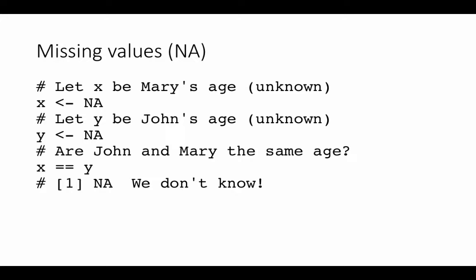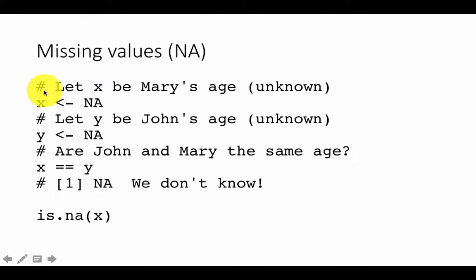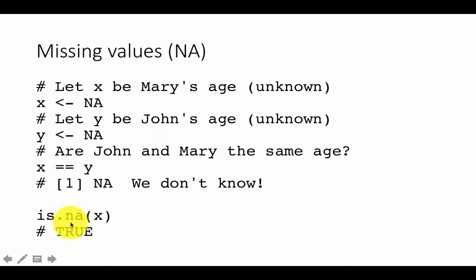Now suppose you have a variable and you want to test if it has an NA value — you can use the function is.na(x). In this case, X is NA, so if you say is.na(x), the answer is going to be TRUE, meaning we don't know what the value of X is.